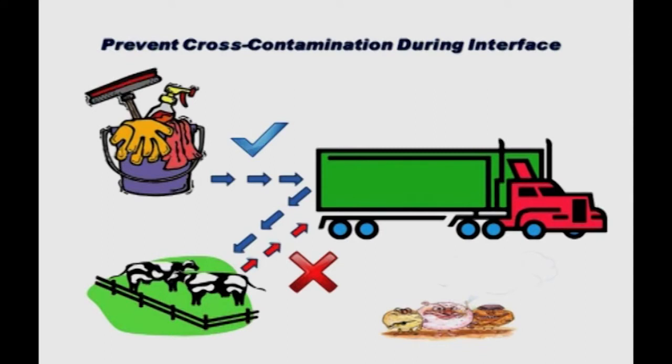Keep raw meat and raw produce separately from cooked meat and cooked produce. During transport, if animal meat and prepared foods like ice cream or ready-to-eat foods are kept in the same truck, microorganisms can spread from the meat to the ready-to-eat foods. Food should be thoroughly packaged, or separate trucks should be used to transport raw and ready-to-eat food items so that cross contamination does not occur during transit.